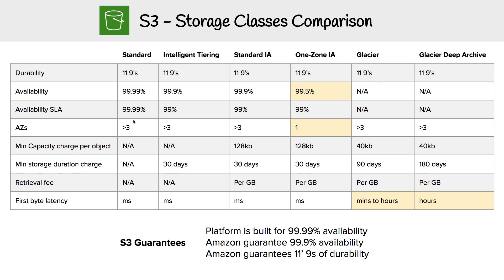For AZs, it's going to run in three or more AZs from Standard to Standard-IA — actually across the board, the only one that it's reduced is for One Zone-IA. I always wonder, if you're running in Canada Central, if it would only use two because there's only two availability zones there. So it's always a question I have, but anyway, it's always three or more AZs.